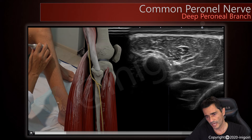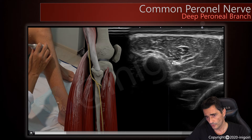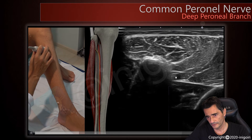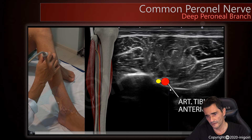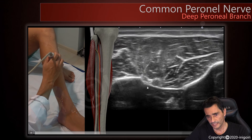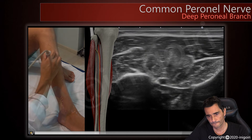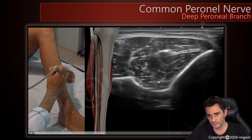— these small hypoechoic round-shaped nerves: this is the superficial branch and this is the deep peroneal nerve. It is difficult to see clearly because these two nerves, especially the deep one, move away from the probe. However, we can notice how this nerve searches for the anterior tibial artery — you can see the artery — and how the nerve runs very close to it and to the interosseous membrane.